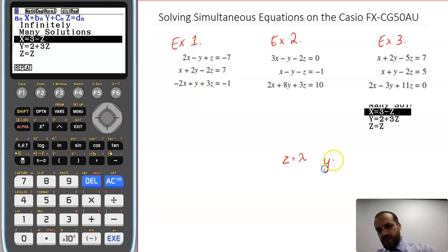And then I say that y equals 2 plus 3, not z, but 3 lambda, and I would say that x equals 3 minus, not z, but lambda. So that would be my answer to this example 3.